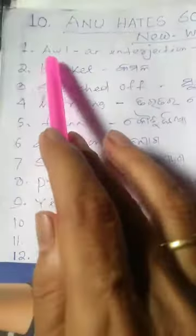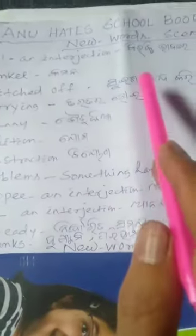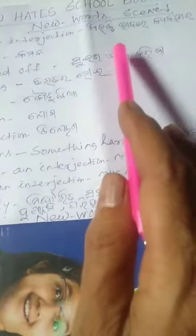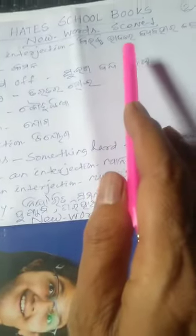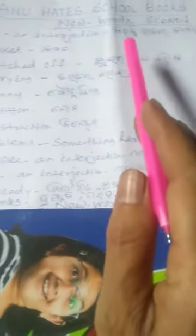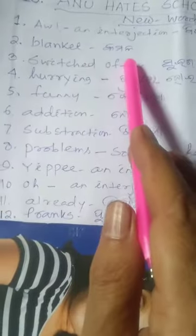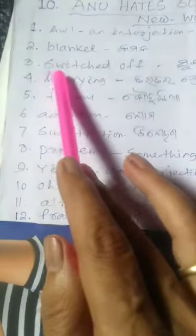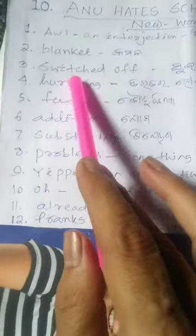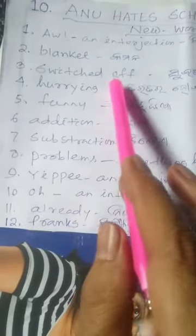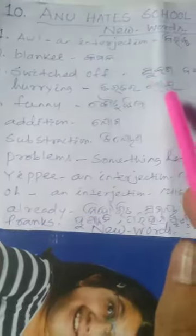Number 1: An Interjection. Vidakti bhavare bebhara kira jai. Number 2: Blanket — Kamadaba. Number 3: Stitched — S-W-I-T-C-H-E-D. Swish bond karibha.